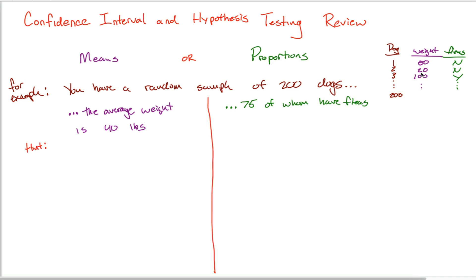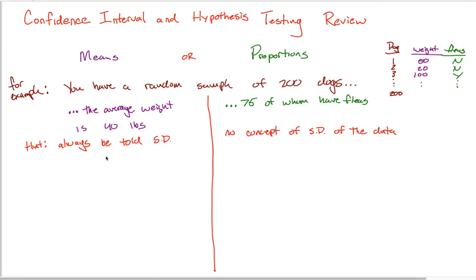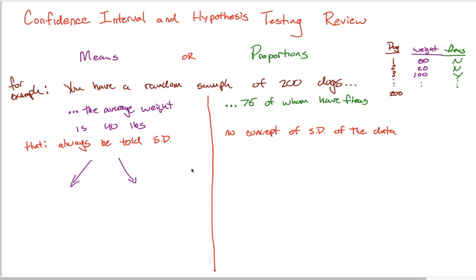A hint: when you're dealing with means you can talk about a standard deviation — how spread out these numbers are. When you're talking about binary categorical data, a standard deviation makes no sense; you can't talk about how spread out yeses and nos are. When dealing with proportions there's no concept of standard deviation. Conversely, when dealing with means you'll always be told the standard deviation or given the data and asked to calculate it.